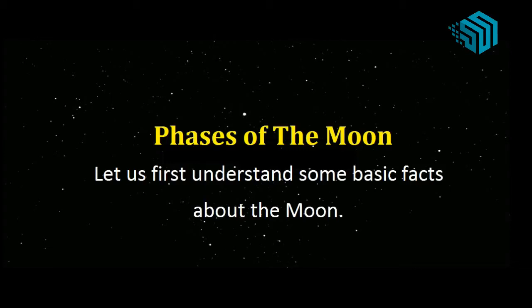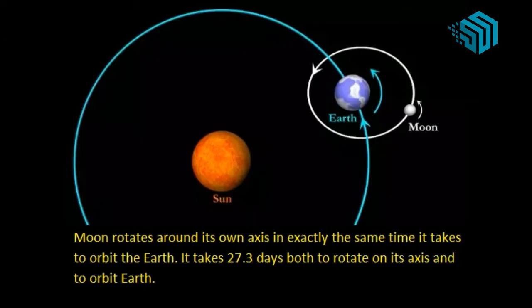Faces of the moon. Let us first understand some basic facts about the moon. Moon rotates around its own axis in exactly the same time as it takes to orbit the earth. It takes 27.3 days both to rotate on its axis and to orbit the earth.